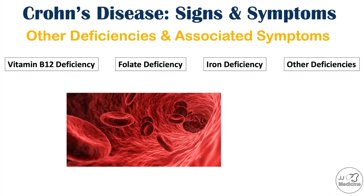Additional deficiencies in Crohn's disease patients include selenium, zinc, and vitamin B1. Vitamin B12 deficiency can lead to macrocytic anemia, depression, fatigue, and neurological symptoms. Folate deficiency can also lead to macrocytic anemia. Iron deficiency can lead to microcytic anemia, where red blood cells are smaller. Anemia symptoms across all types include fatigue, pallor, shortness of breath, and chest pain in severe cases. Selenium, zinc, and vitamin B1 deficiencies also carry their own associated signs and symptoms.